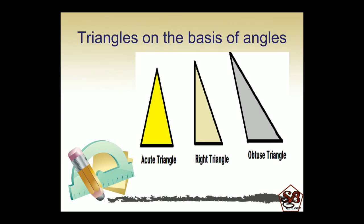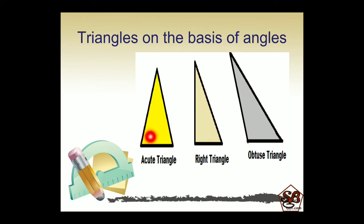Now let's understand triangles on the basis of angles. Before going on to this, let's revise the different types of angles we have learnt in previous videos. Acute angle: all angles less than 90 degrees. Right angle: equal to 90 degrees. Obtuse angle: greater than 90 degrees but less than 180 degrees. Now, based on the angles of the triangle — that is, the three angles formed inside the triangle — we can categorize them as acute triangle, right triangle and obtuse triangle.